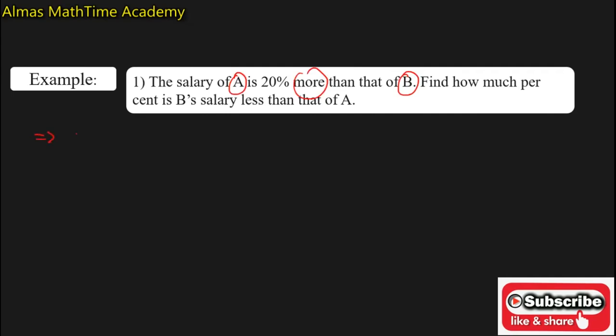That is x upon 100 plus x into 100 percent. The value of x is 20.